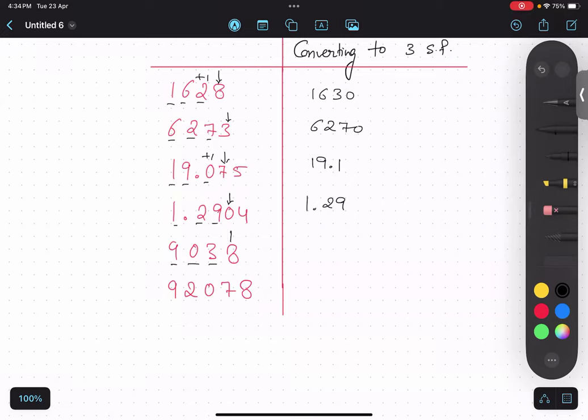1, 2, 3. So 8 is greater than 5. So plus 1. So 9, 0. 9, 0, 4, 0.